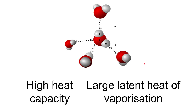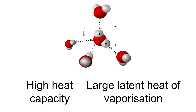Next up we have the thermal properties of water. Now these hydrogen bonds mean that water can store quite a lot of energy within its mass. So here you can see we've got a number of different water molecules with lots of hydrogen bonds between them.